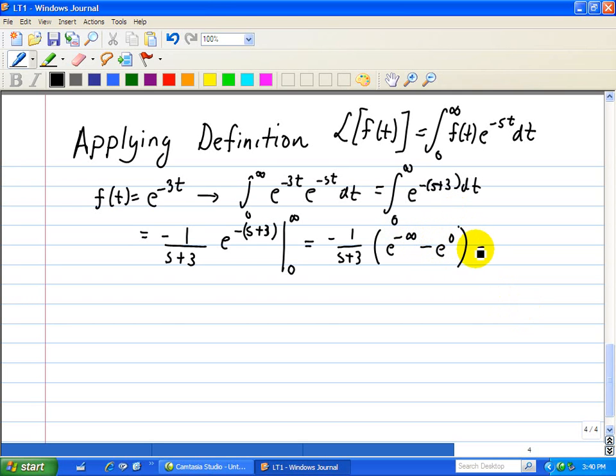Which is equal to 1 over s plus 3. So the Laplace transform of e to the minus 3t is equal to 1 over s plus 3.